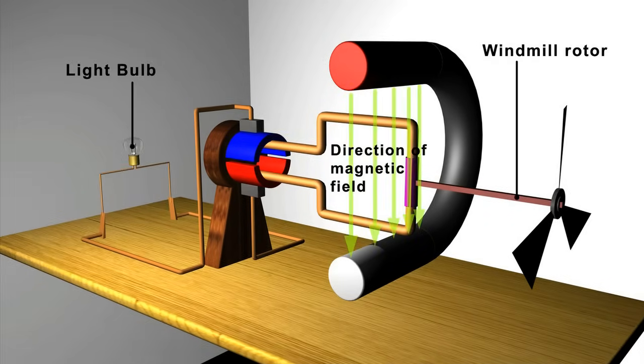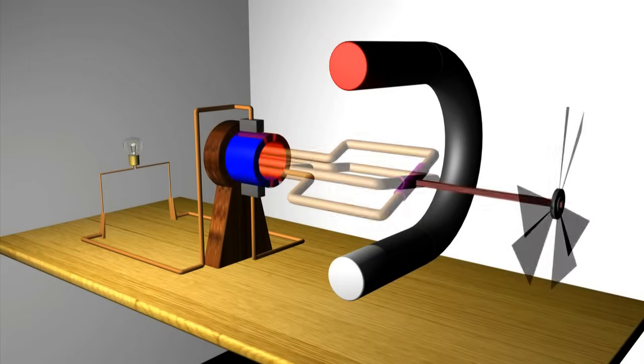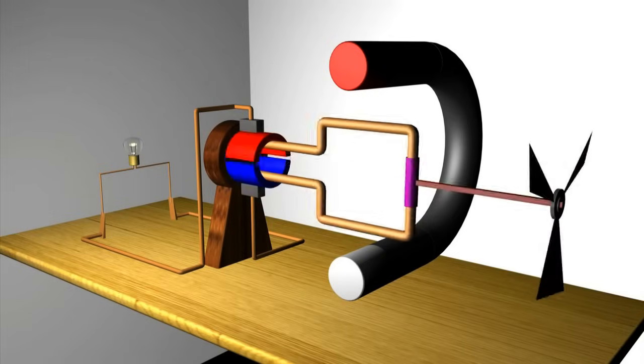We will leave the magnetic field as it is, and as the wind rotates the blade, an electrical current is produced.